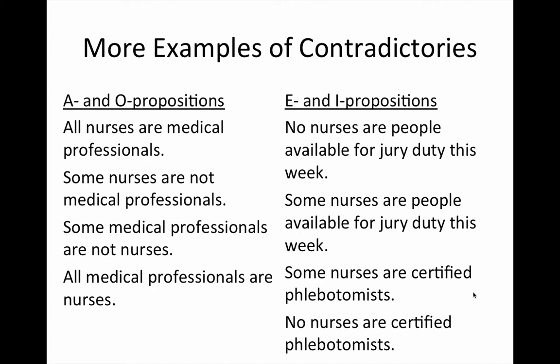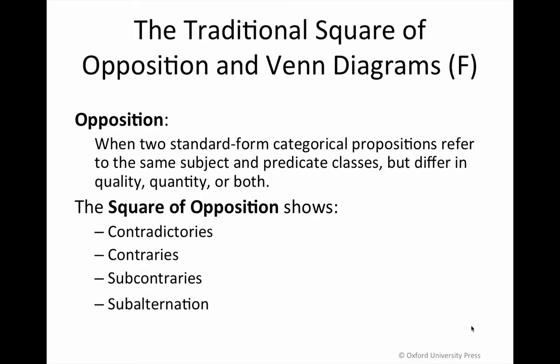We now move on to the square of opposition as well as the immediate inferences — conversion, contraposition, and obversion — from the standpoint of the traditional interpretation of the universal claim. The traditional or Aristotelian interpretation assumes existential import, which is to say there's the assumption that a member of the subject class exists. You'll notice that this assumption makes possible quite a number of inferences. Things get a little complex, so you'll want to think about which inferences are valid on this interpretation, and every other inference is undetermined or invalid.